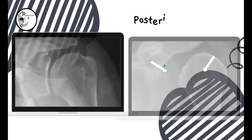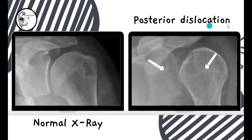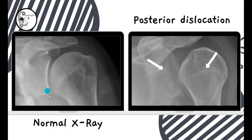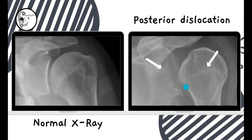The second type is posterior dislocation of the shoulder. There are some important facts to notice here. On the left side, the normal X-ray shows the glenoid cavity and head of the humerus clearly. On the other side, there is an increased joint space and you are not able to make out the margin of the head of the humerus because it is irregular.